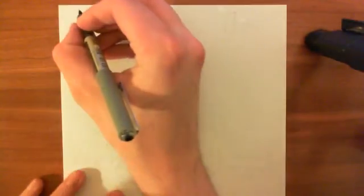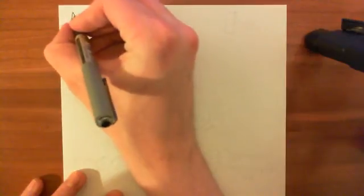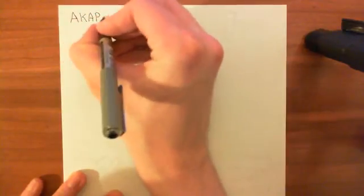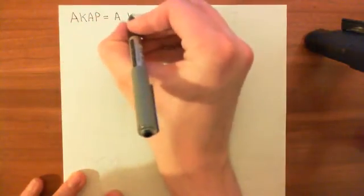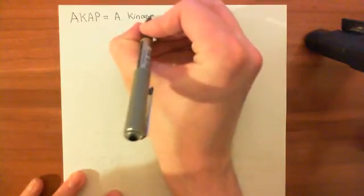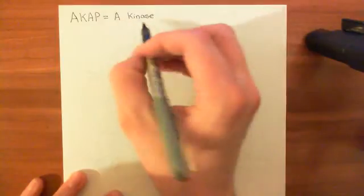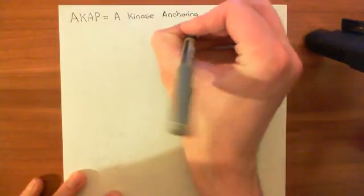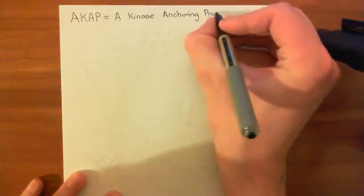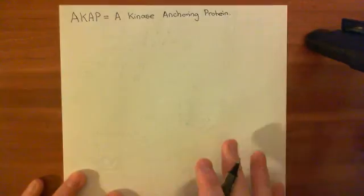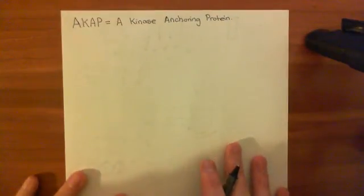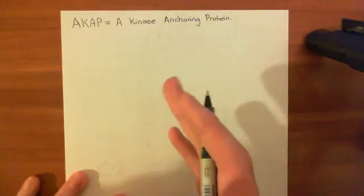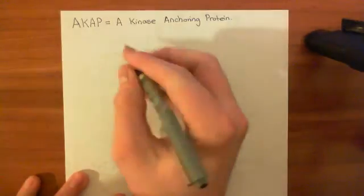The proteins that type 2 protein kinase A can bind to are known as AKAPs — A-kinase anchoring proteins. A-kinase is just another name for protein kinase A, so an AKAP is just a protein which can anchor protein kinase A at the plasma membrane. What you find is that at the plasma membrane, you don't just have protein kinase A disorganized — instead, you have a very organized arrangement.